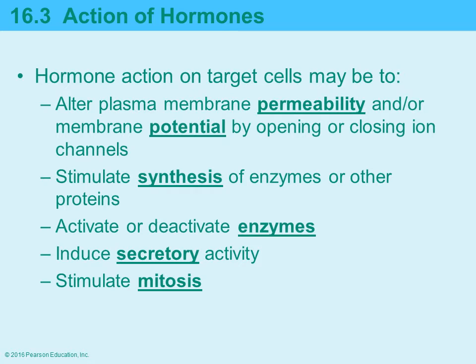When a hormone is secreted, it binds to receptors on the target cell. What happens next depends on the hormone and the target cell. It may affect the permeability of the plasma membrane, change the membrane resting potential by opening or closing ion gates, trigger synthesis of enzymes or additional proteins, deactivate or activate enzymes, induce secretion of other compounds, or stimulate mitosis.